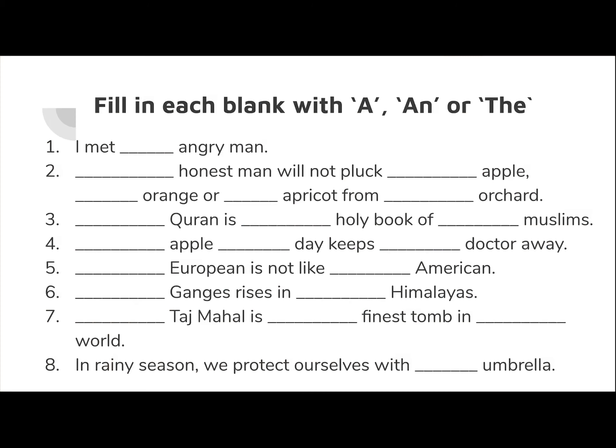Now children, fill in each blank with a, an, or the. I met an angry man — because in the word angry the first letter a has a vowel sound. An honest man will not pluck an apple, an orange, or an apricot from an orchard.